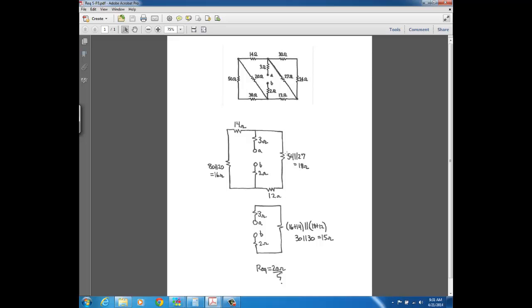And those 30 ohm resistors are in parallel, because this series combination, the 14 and 16, and this series combination, the 18 and 12, they share the same two nodes. See how this node here has one side of this series combination and one side of this series combination connected. And then this node has the other side of this series combination and this series combination. So you see those two series combinations that equal up to 30 are both in parallel. And two 30 ohm resistors in parallel gives you 15.